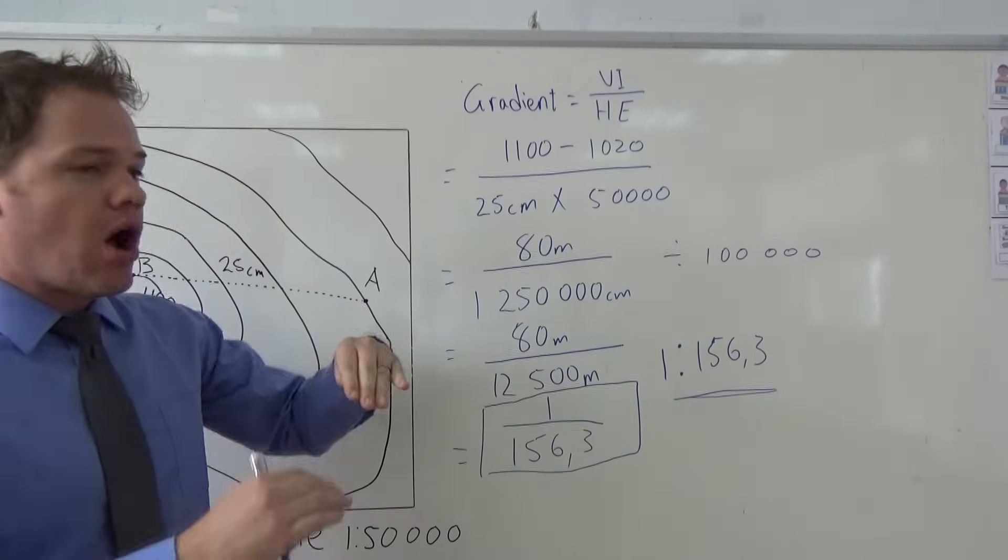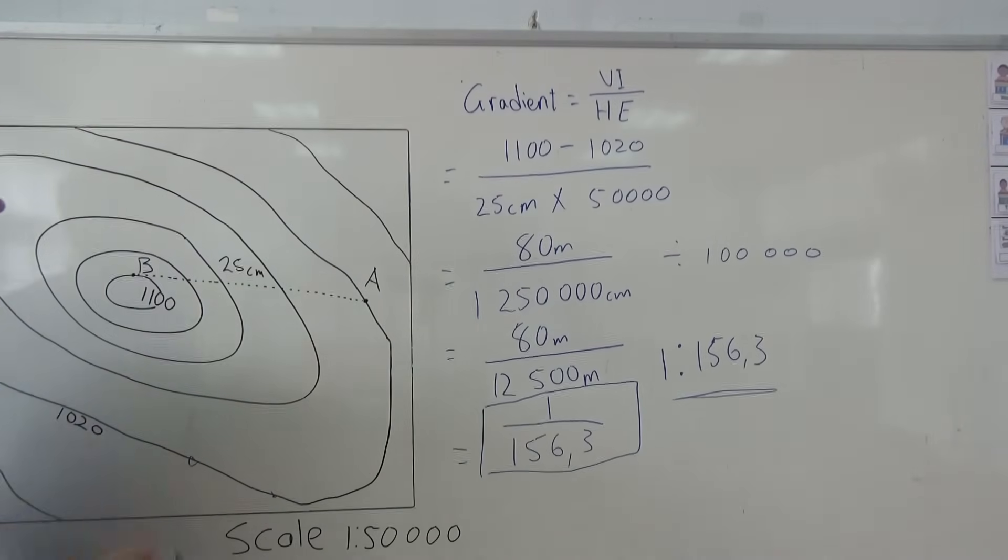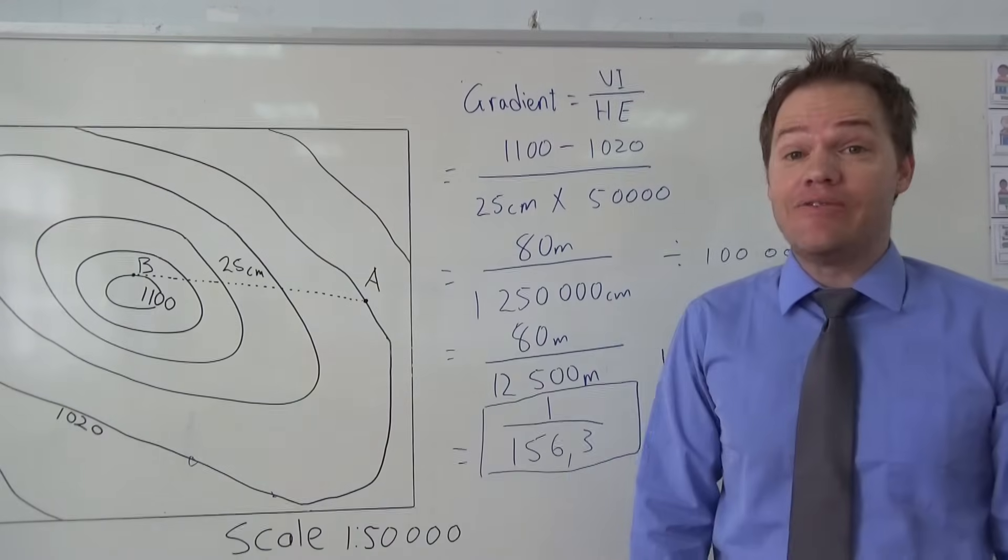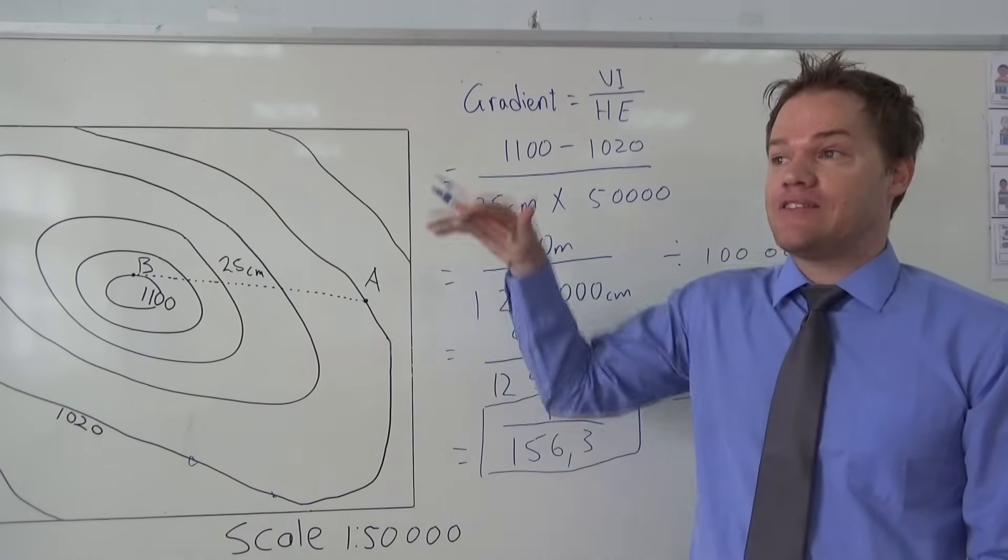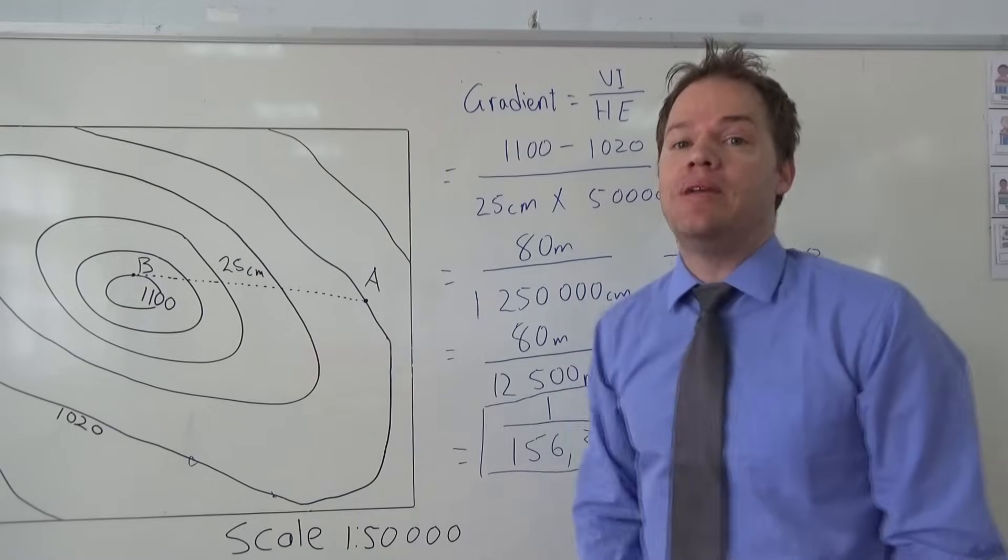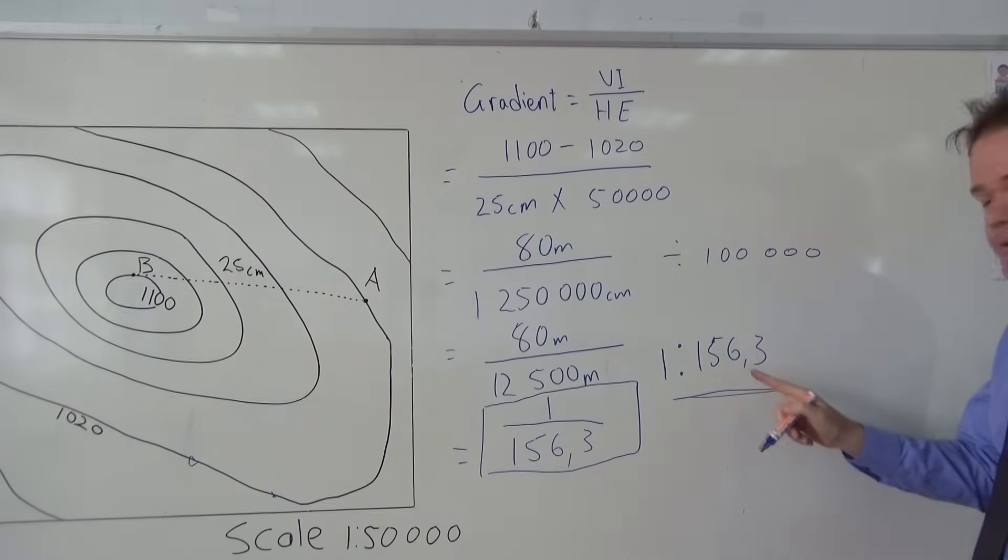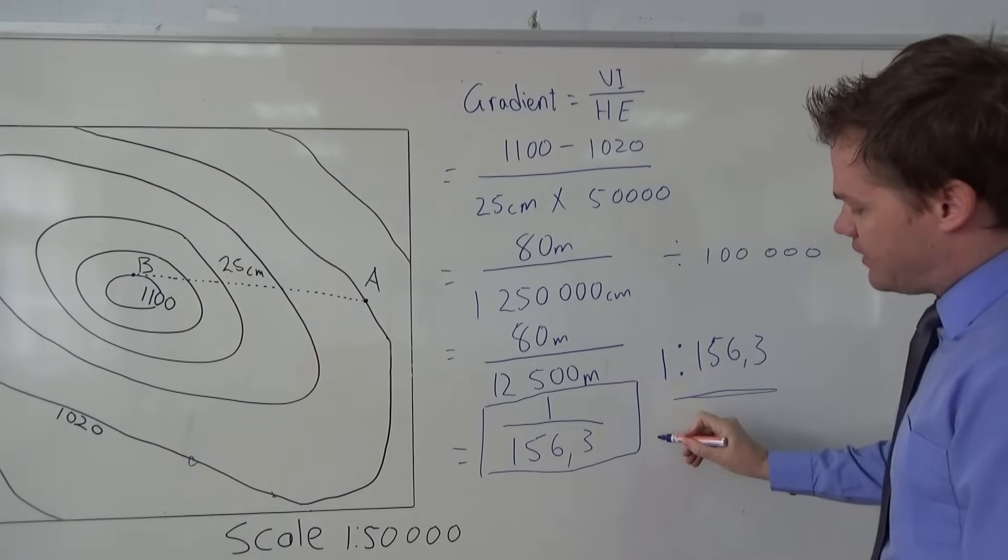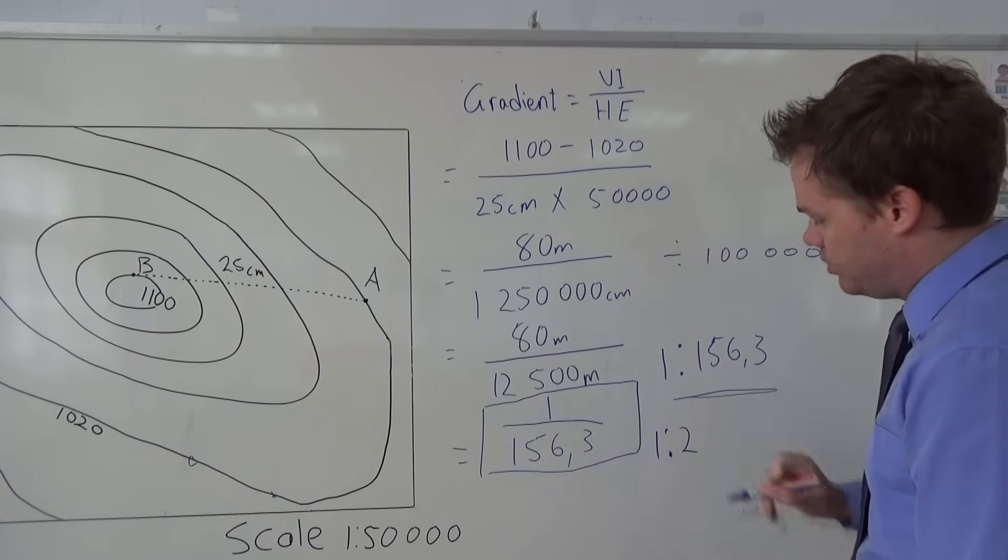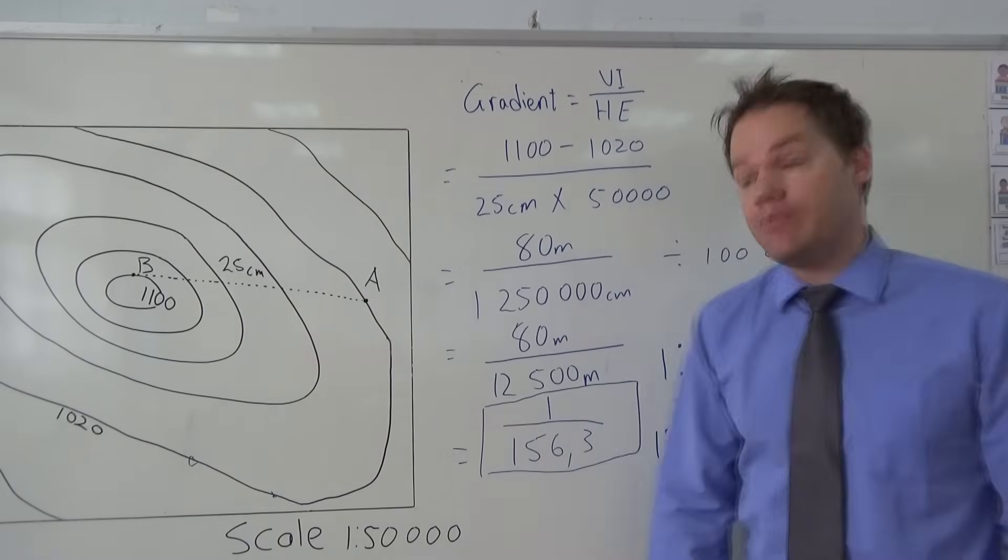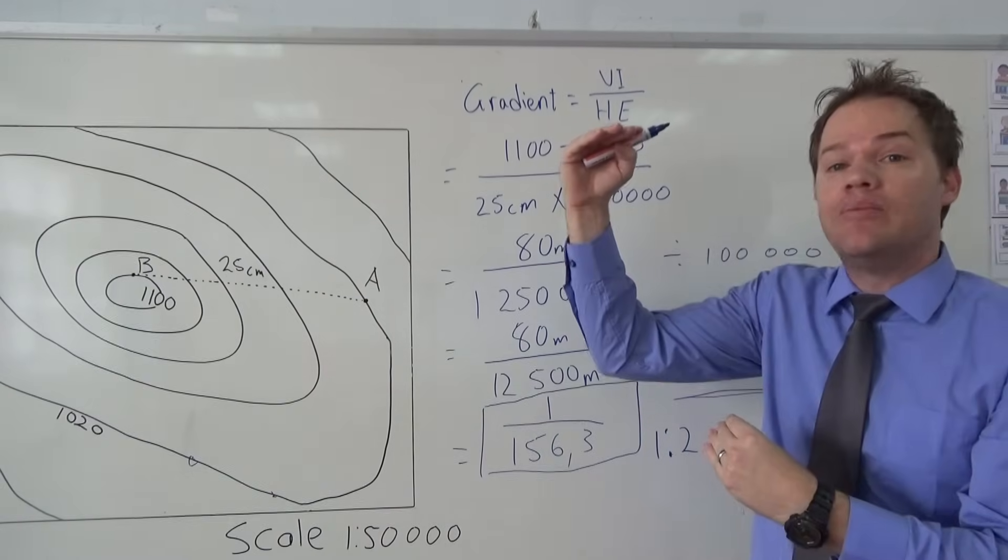Now what does this tell us about the slope? It tells us that it's a very gentle slope because you have to travel quite a long distance before there's an increase in height of only one meter. So the smaller this number here, the steeper the slope. So let's say there's another gradient and the answer is 1 to 2. Then it means the slope is very steep because for every two meters that you travel from point X to point Y, there's an increase in height of one meter, and that is quite steep.